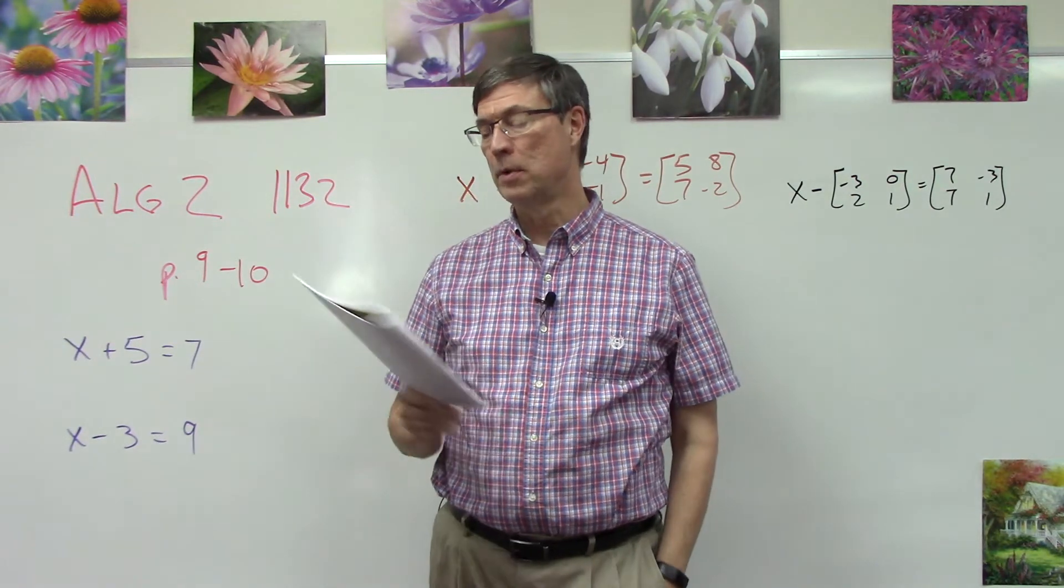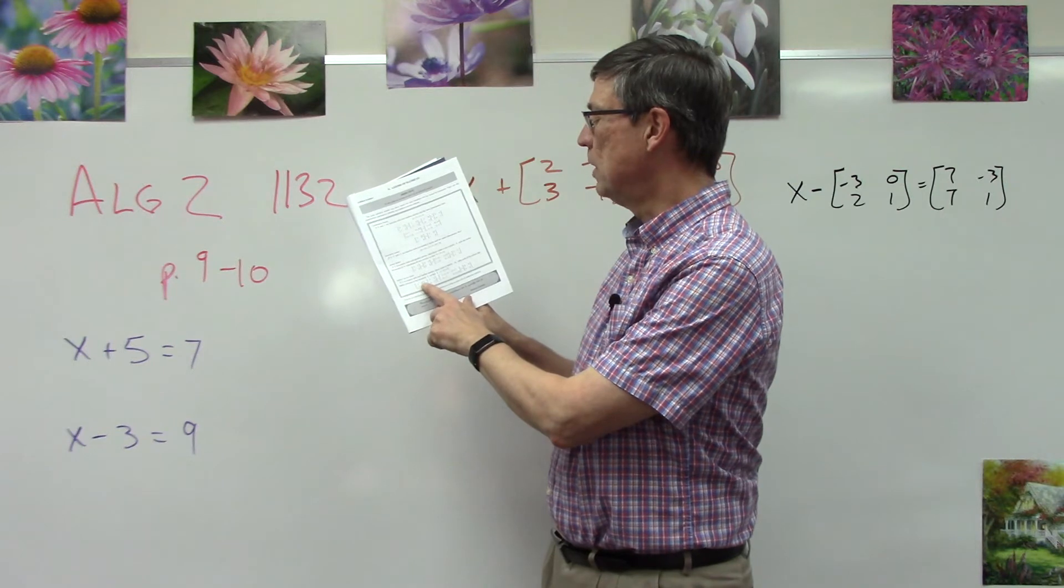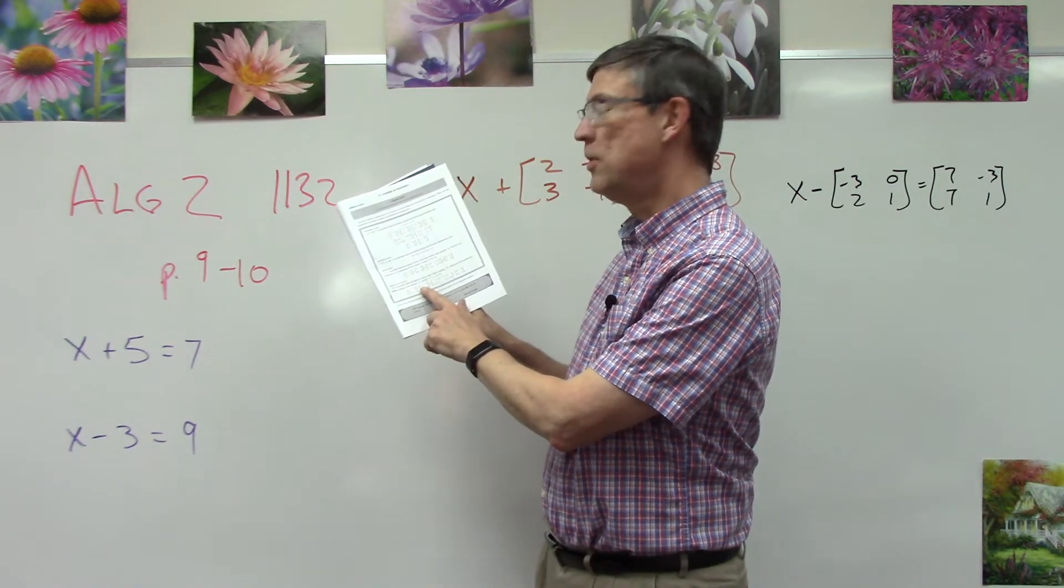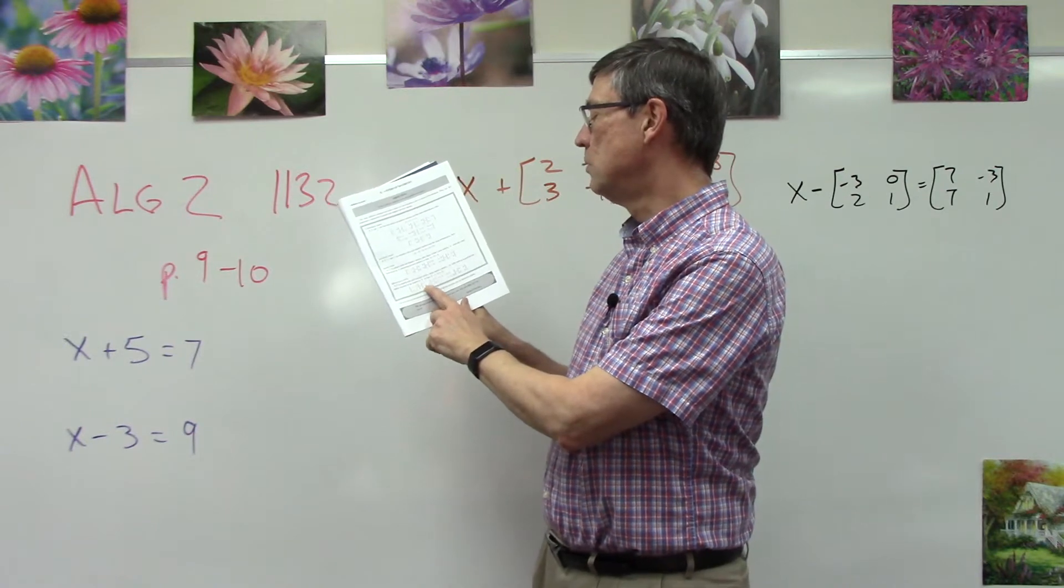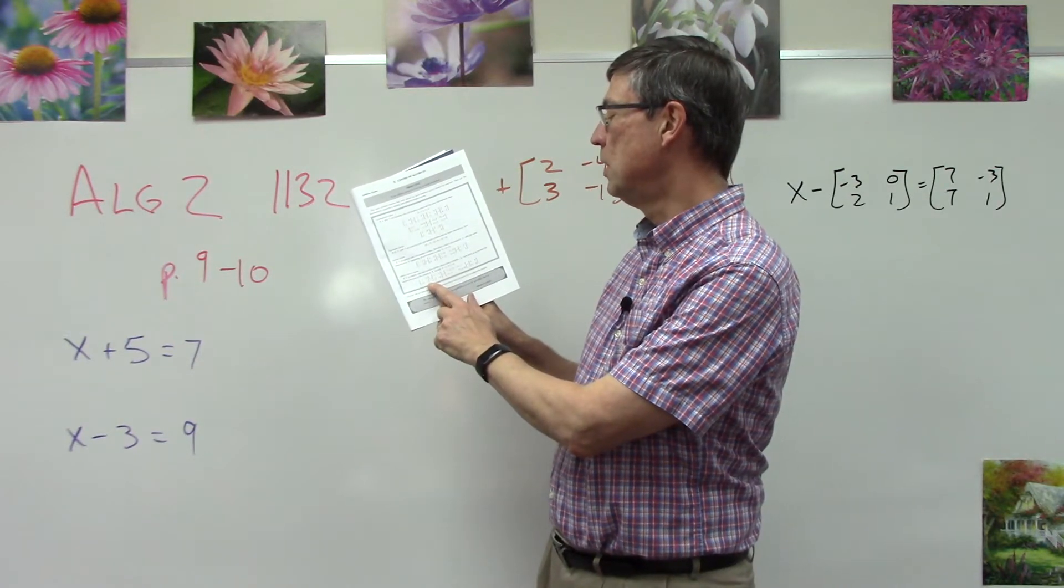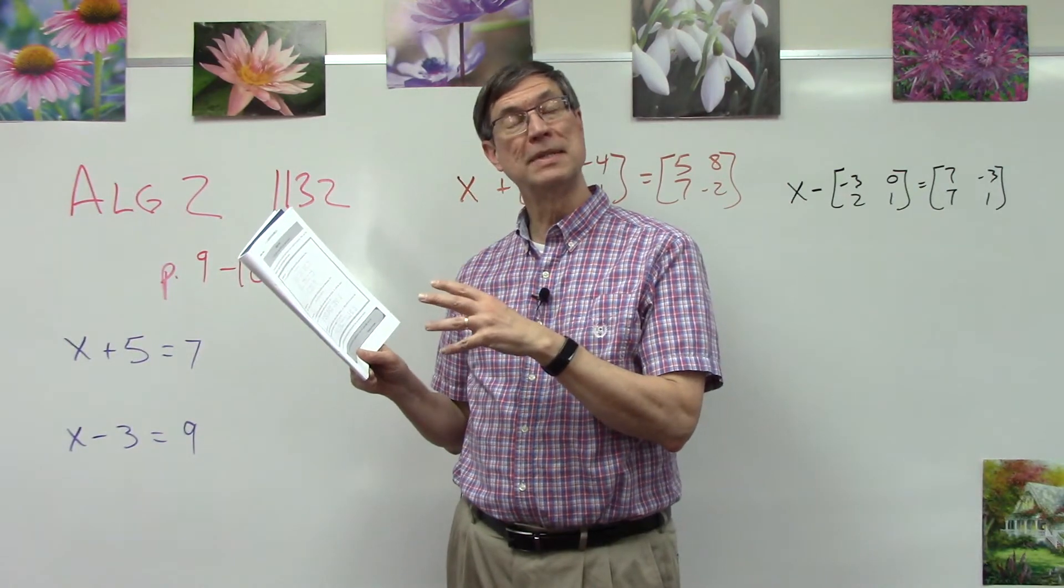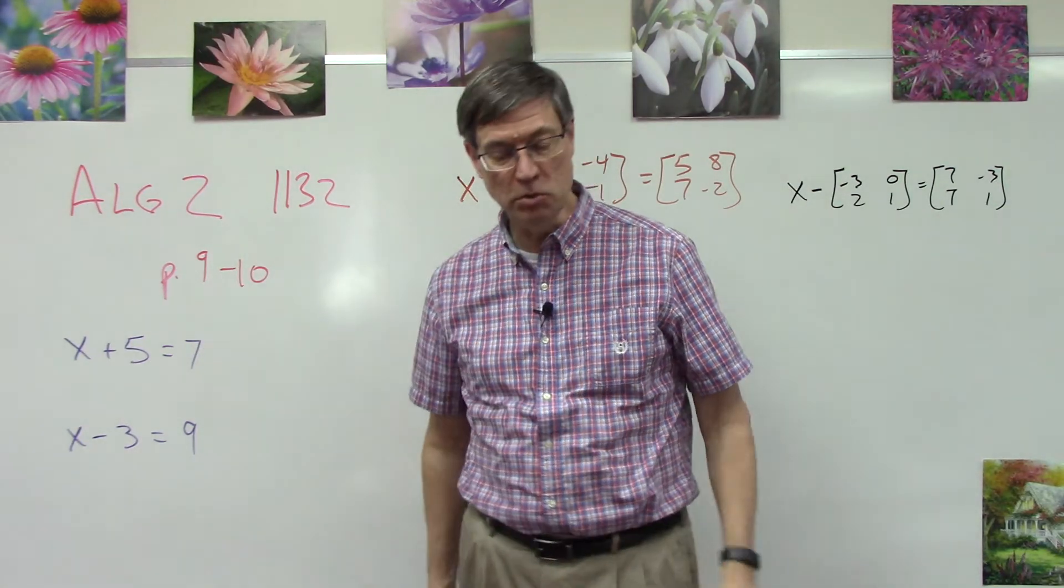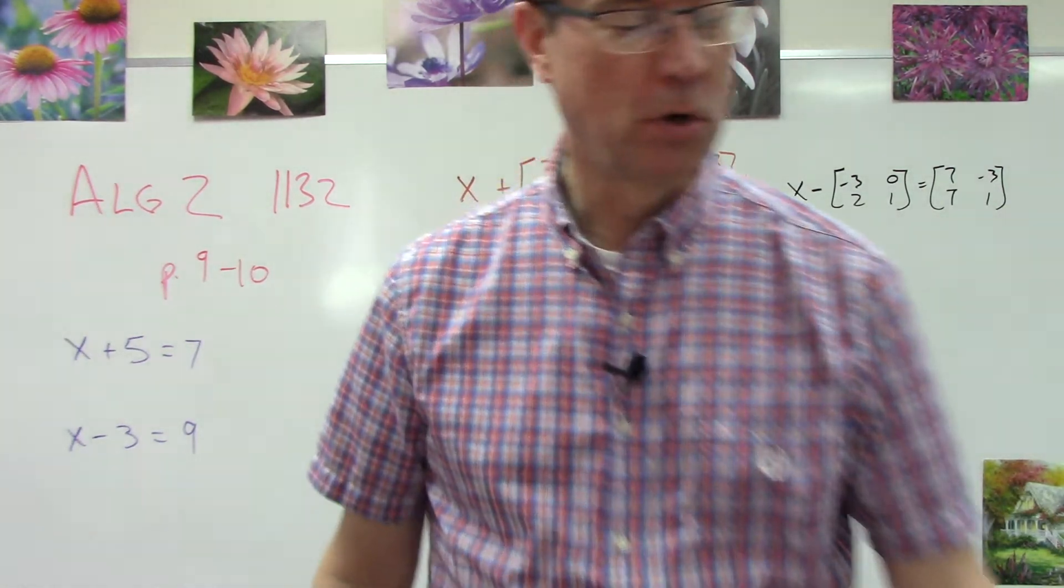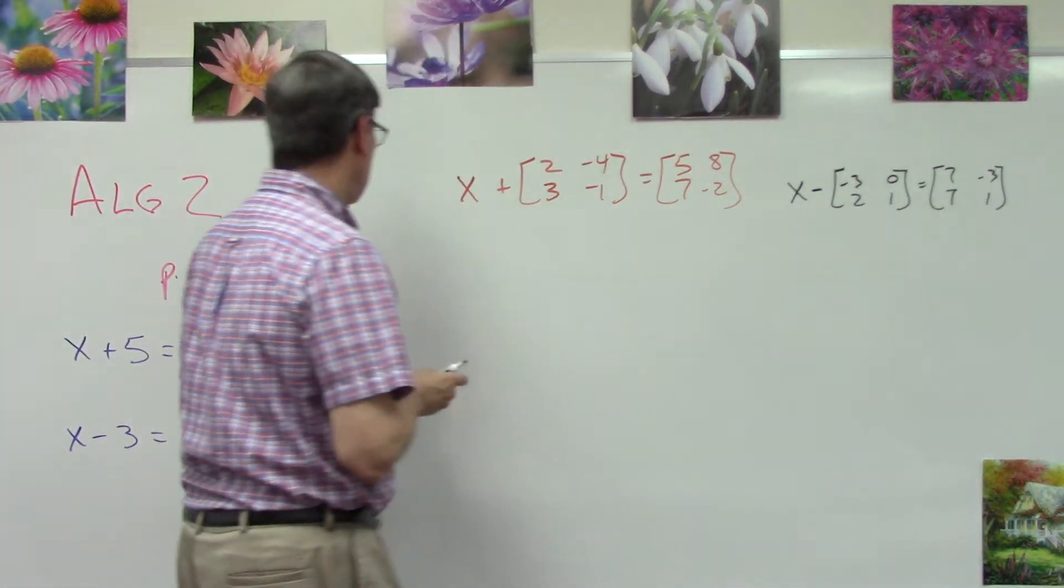So down here at the bottom we have [1, -3, -2, 5]. If we add the opposites - so negative 1, the opposite of negative 2 is positive 2, the opposite of negative 3 is 3, negative 5. Then when you add those two matrices together you get [0, 0, 0, 0]. We're going to use that to solve.